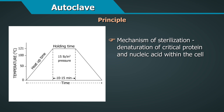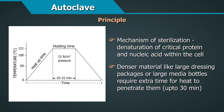The mechanism of sterilization involves denaturation of critical proteins and nucleic acids within the cell. Denser material, like large dressing packages or large media bottles, require extra time for the heat to penetrate, which may be up to 30 minutes.